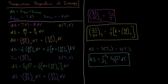If we know the constant-volume heat capacity at all temperatures and have the entropy at any given temperature, we can find the entropy at another temperature. This is going to be really useful for finding the entropy of certain substances at a given temperature.